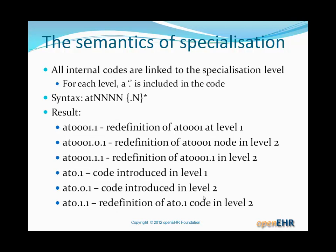All of the internal codes are linked to the specialization level. For each level, a dot is included in the code. The syntax of these codes is AT_NNNN and then a potential repeating dot-N section. As you might guess, the first part of the code is somewhat historical in nature — if we were designing the code system again, we would probably just have free numeric parts rather than the four-digit part at the top. It doesn't actually make much difference practically. So the result is that we could have codes like you can see in the examples.